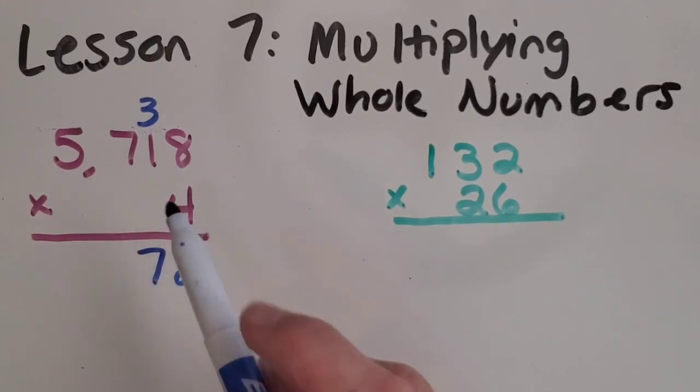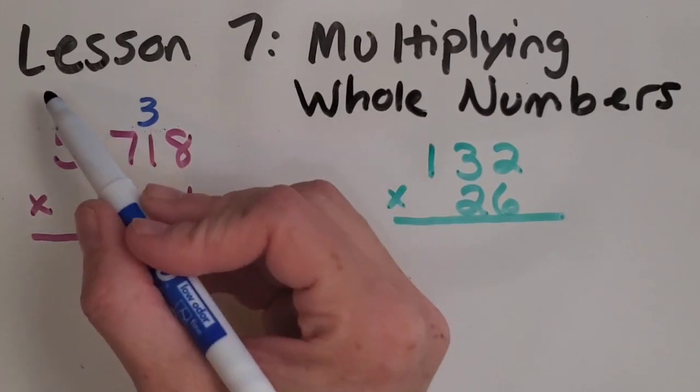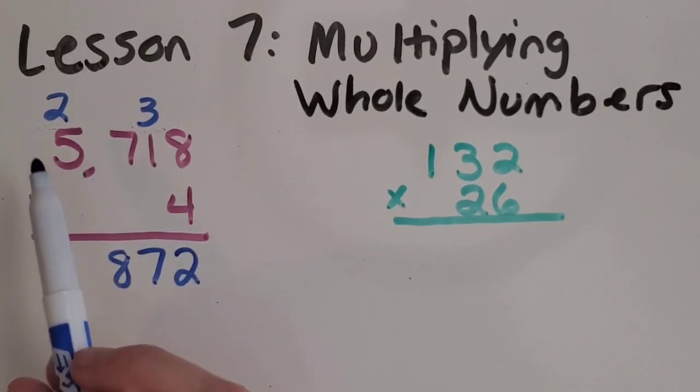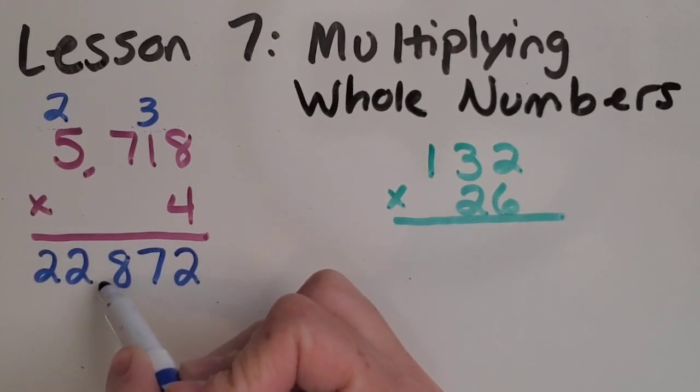Seven times four is 28. So this one we do need to regroup again. And then we'll finish off with the thousands. Four times five is 20, plus the two is 22. So our answer ended up being, our product was 22,872.